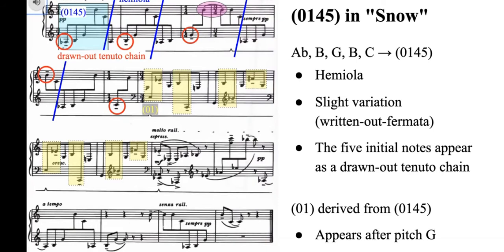Such usage of 01 after a specific pitch is also found in the following two movements, which can be interpreted as a factor that enhances the cohesion between these movements. In general, 0145 is presented as a drawn-out form, as well as in a scattered 01 subset in the movement of Snow.